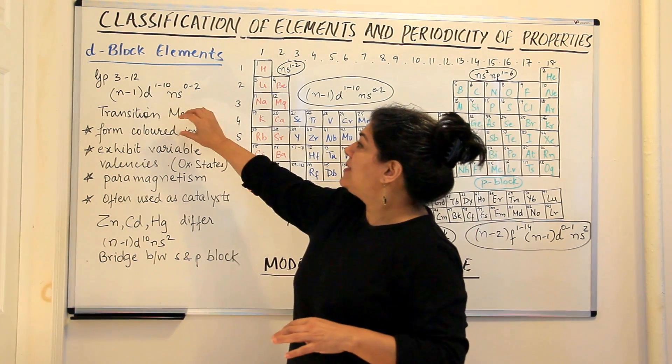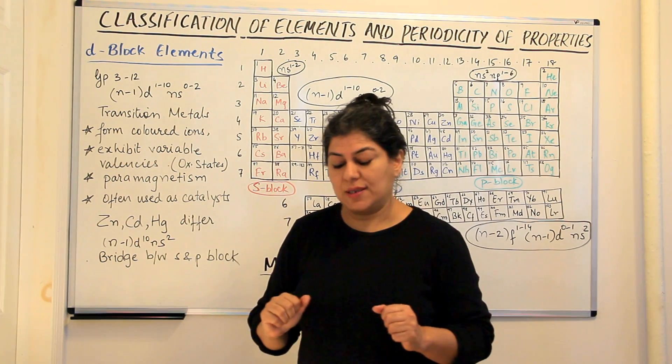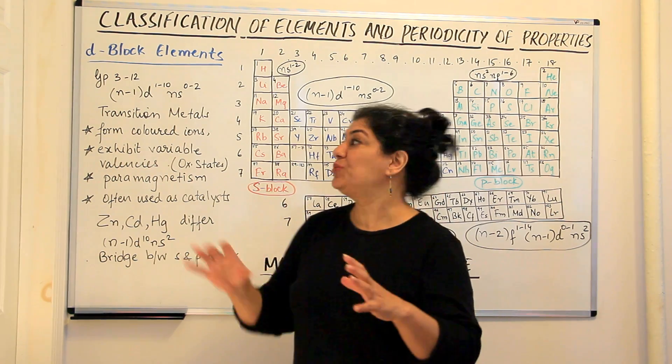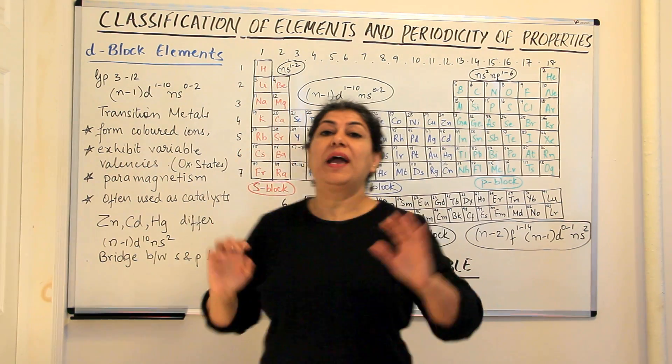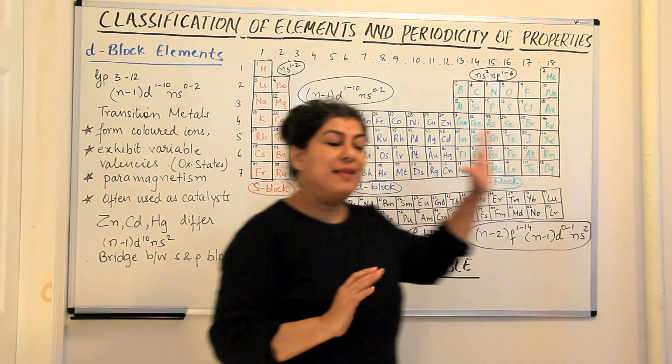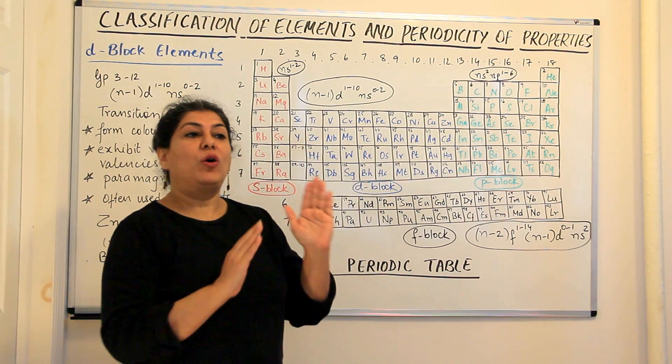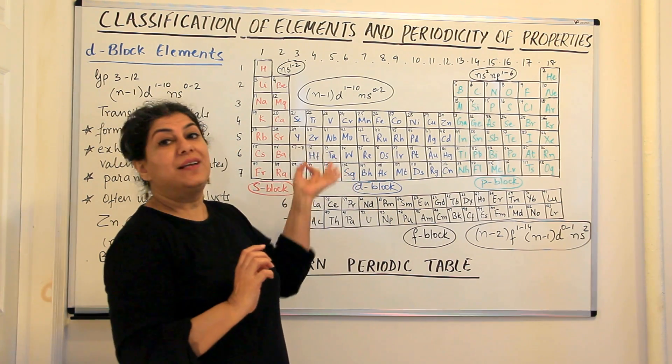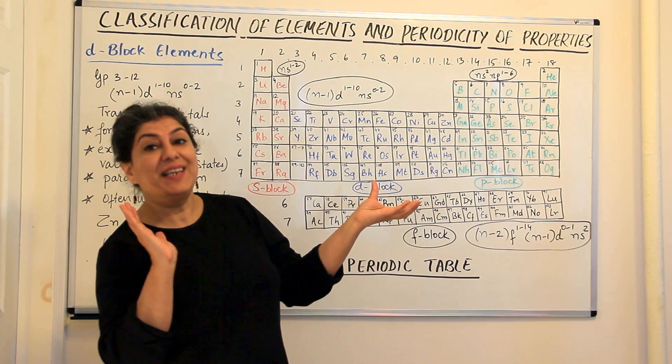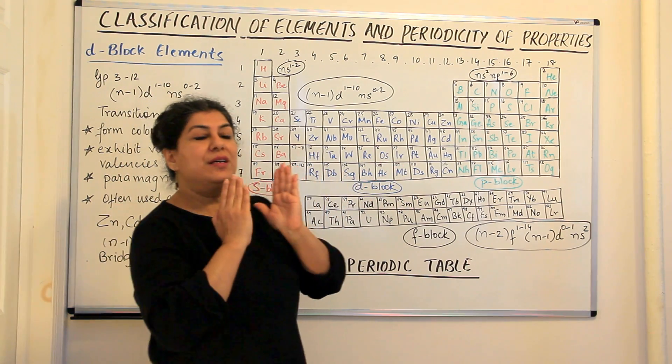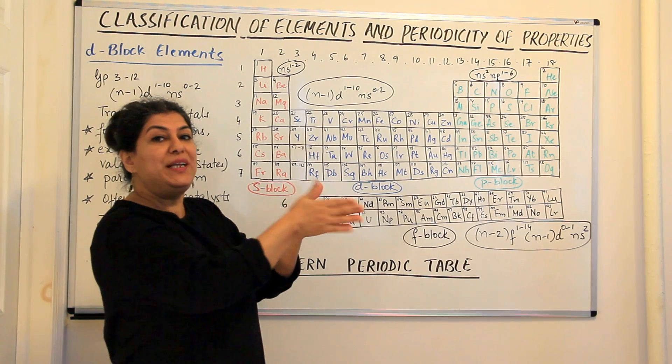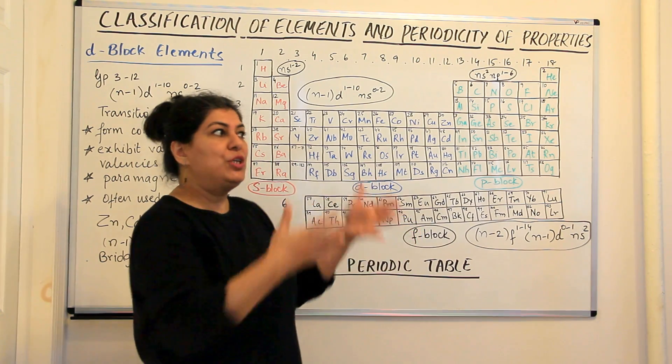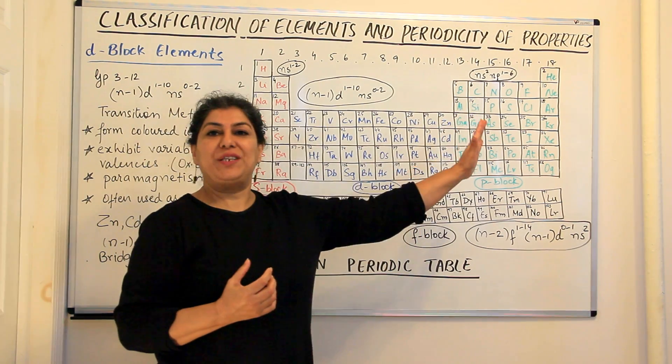But these elements are called transition metals. Why are they called transition metals? Because their properties lie somewhere between the extreme properties of the S block and the P block elements. The entire periodic table is made on the basis of an increasing atomic number. Every element is one atomic number more than its preceding one. Therefore, the electronic configuration is also gradually changing. There is a gradation in the electronic configuration which results in the gradation in their properties.